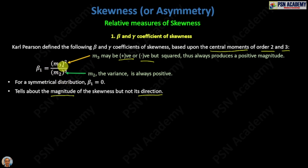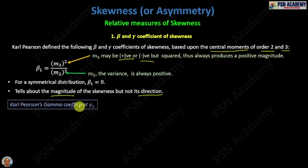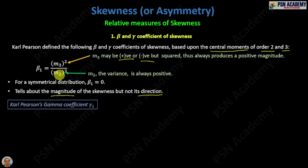This is the problem with beta one. Karl Pearson's gamma coefficient comes to the rescue. The idea is: the third-order central moment in the numerator may be positive or negative. If you can clear the power of two, the numerator will be positive or negative depending on the sign of that moment. The denominator, being based on variance, will always be positive — you cannot change that.